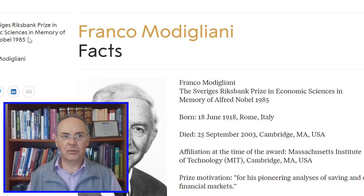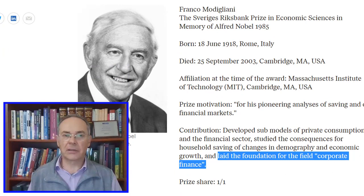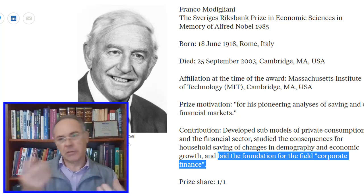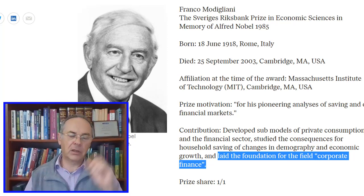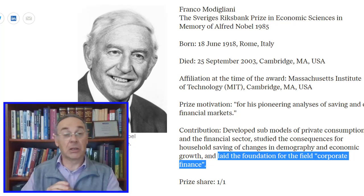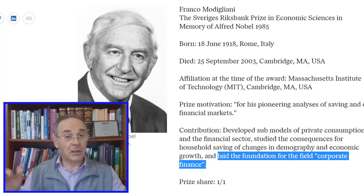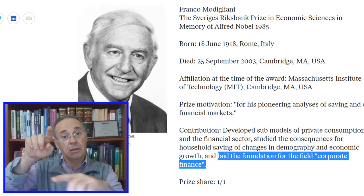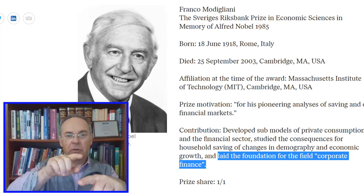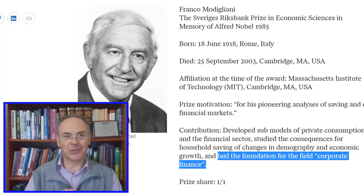Franco Modigliani was awarded the Nobel Prize in 1985. The motivation talks about his work helping to lay the foundation for corporate finance. You will come across the Modigliani-Miller hypothesis if you do more finance — it relates to how much debt and equity to take on. But he also did very important research on consumption and saving across a person's lifespan. Think of diminishing marginal utility: we try to keep consumption patterns level over our lifetime. When we're working, we build up savings, and when we retire, we draw down that wealth to maintain consumption levels — which is one way to understand why superannuation is a useful product.